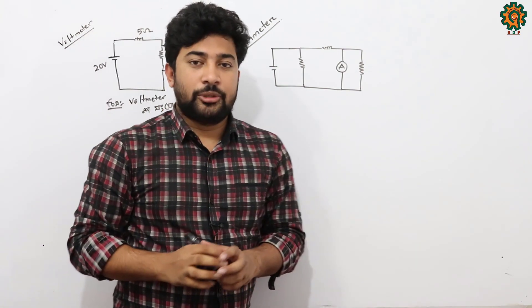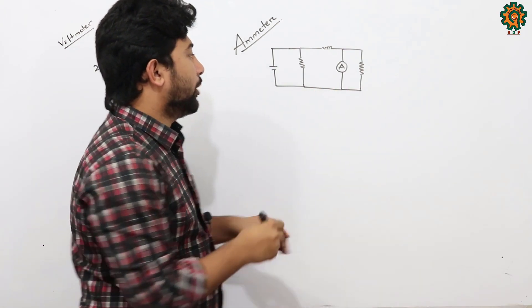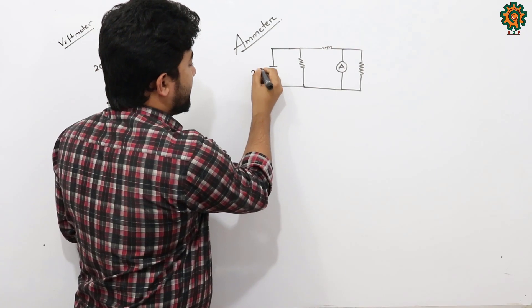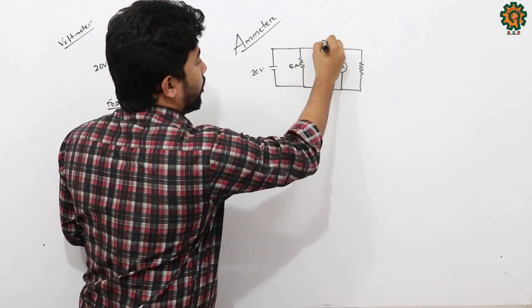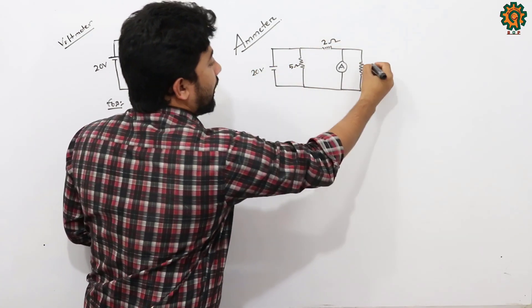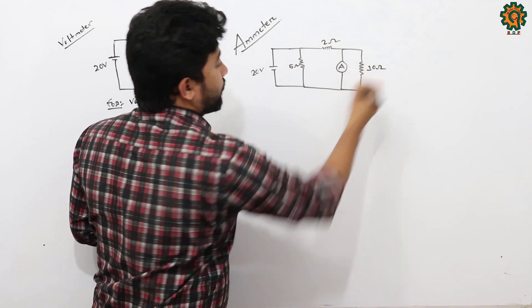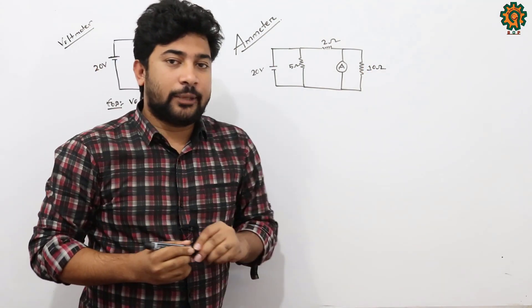If we look at the circuit line, the outputs are under control. The next voltage drop is 5, then it's 2-10, or the voltage drop is 10. So, take a look at the resistance.